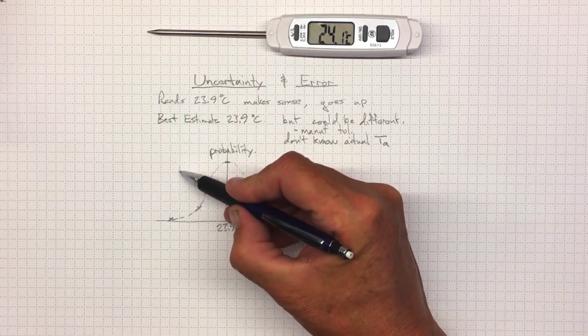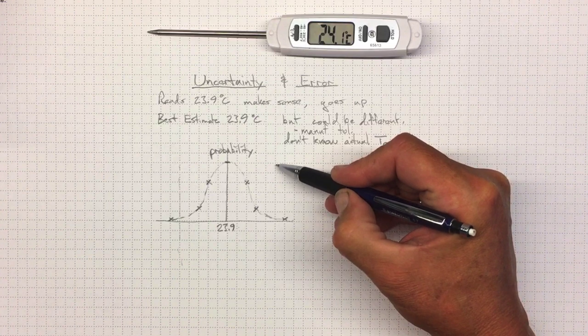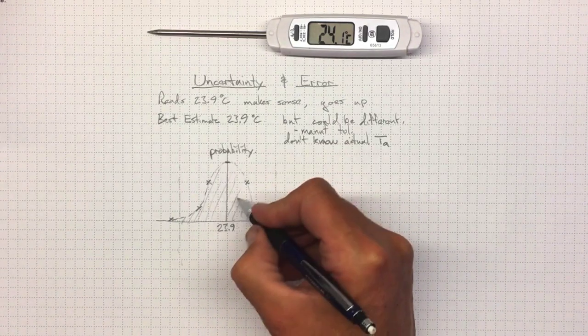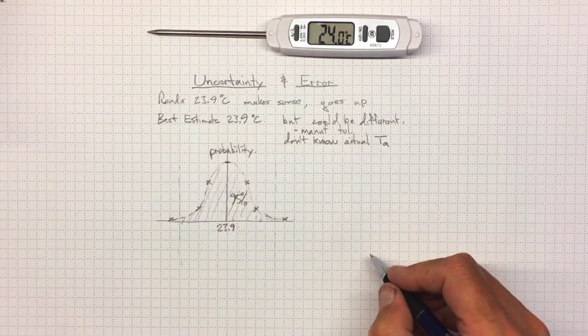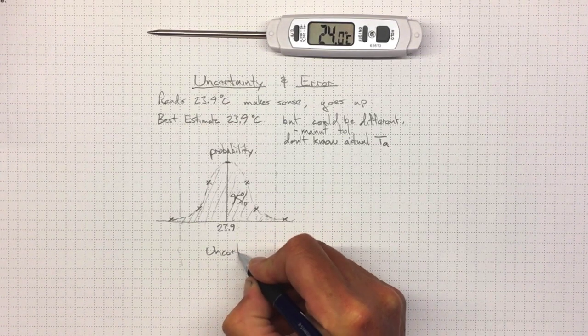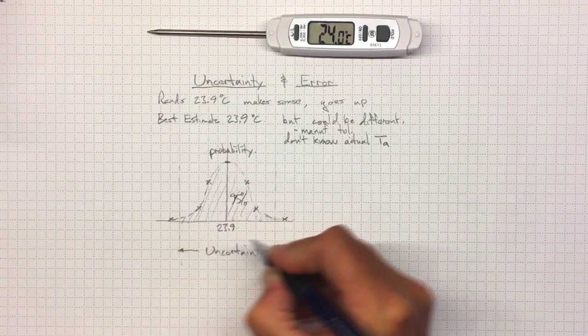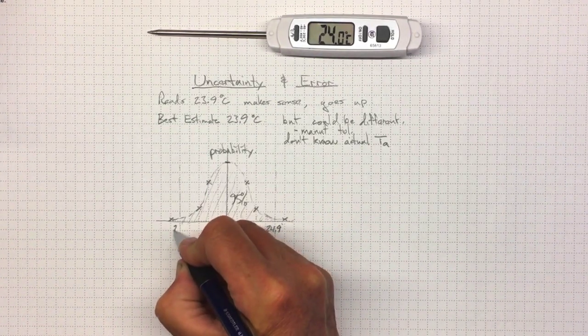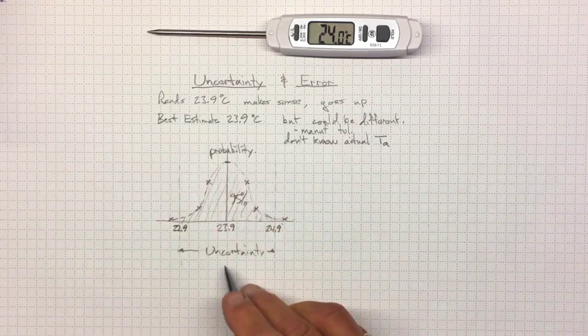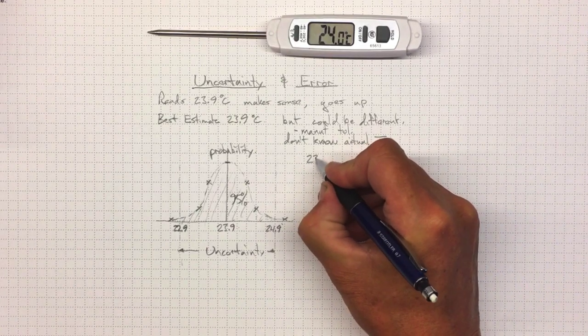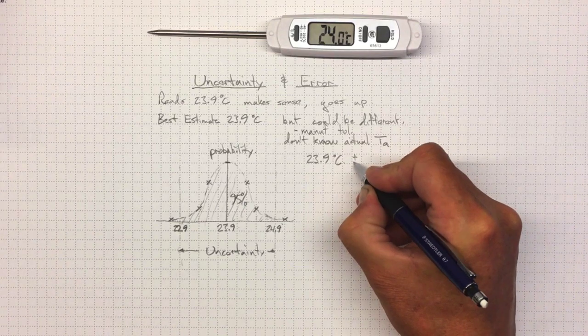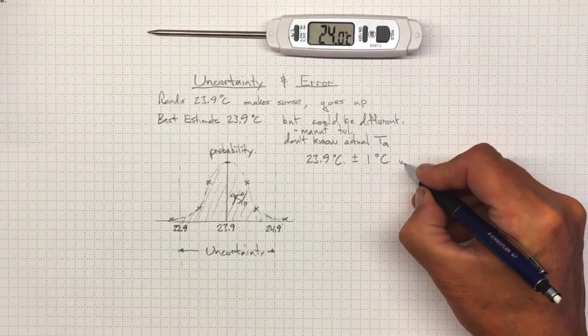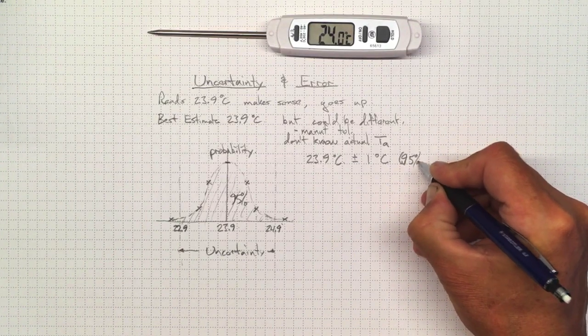And if we drew some boundaries here so that 95% of the probability was inside, so if that represents 95% of all the probability, then this is the range of our uncertainty. So if it turned out that that was about 24.9 and 22.9, then we would say that our temperature was 23.9 degrees Celsius plus or minus 1 degree Celsius with 95% probability.